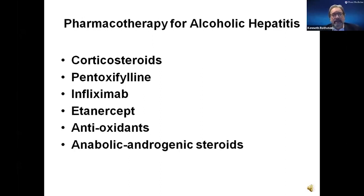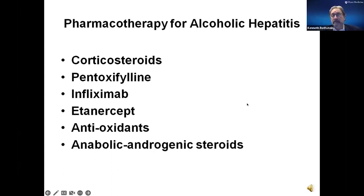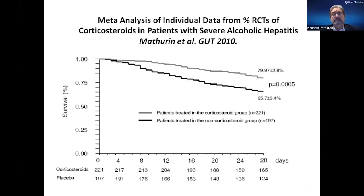Various treatments have been tried, and the only one we really use now is corticosteroids. I was not a big fan of corticosteroids early on — I had a lot of patients dying of infection — but over time, with more experience and studies, I am now a firm believer in using steroids in eligible patients. A meta-analysis of many randomized controlled trials showed a clear significant difference in survival: close to 80% at one month with steroids compared to 65% without. We'll know within a week if you're going to respond.